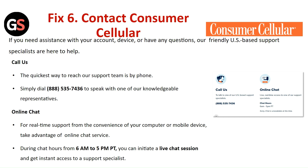Fix 6: Contact Consumer Cellular. If you need assistance with your account, device, or have any questions, Consumer Cellular support specialists are here to help. The quickest way to reach the support team is by phone — simply dial to speak with a knowledgeable representative. For real-time support from your computer or mobile, you can take advantage of the online chat service during chat hours. Start an online chat session to get instant access to a support specialist.